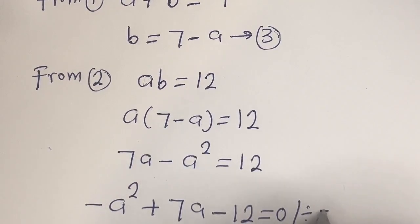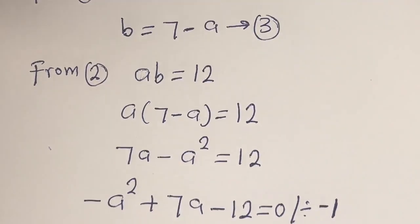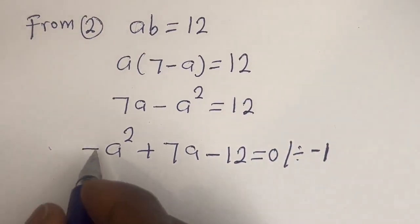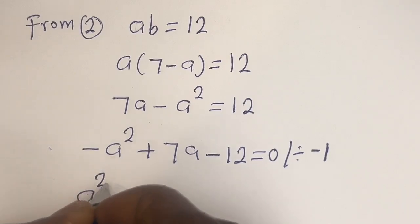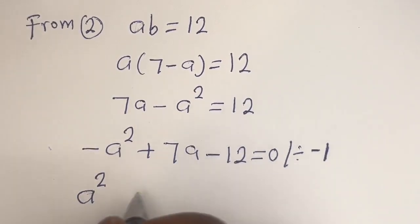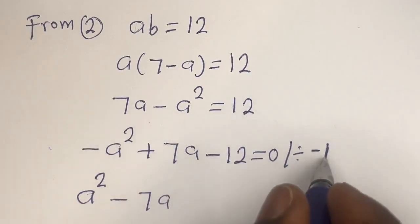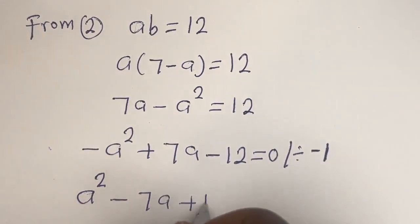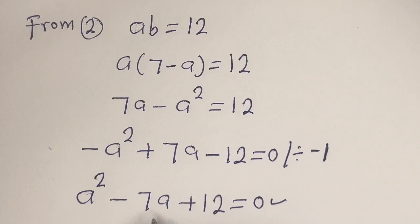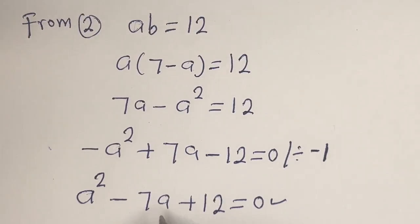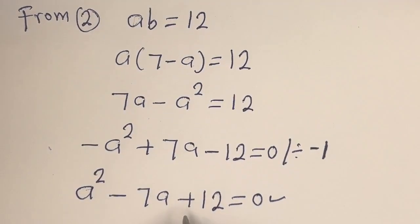Let's divide all through by minus 1: minus a squared divided by minus 1 is a squared; plus 7a divided by minus 1 is minus 7a; minus 12 divided by minus 1 is plus 12. So a squared minus 7a plus 12 equals 0. This is a quadratic equation. Let's solve this using the quadratic general formula or factorization method.